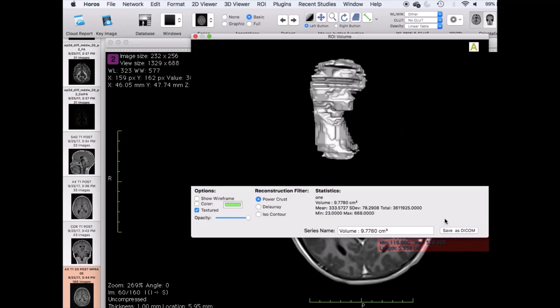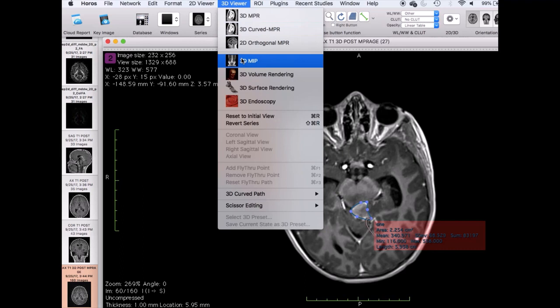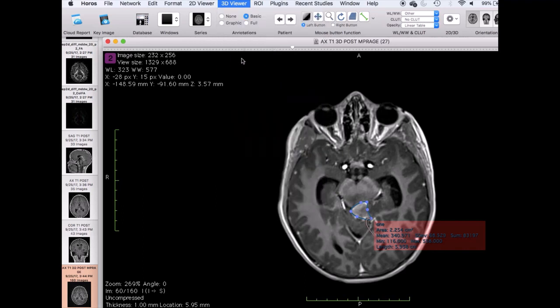To visualize a 3D rendering of the tumor, press 3D viewer and select 3D MIP. The 3D tumor will be visible within the patient's 3D reconstructed skull.